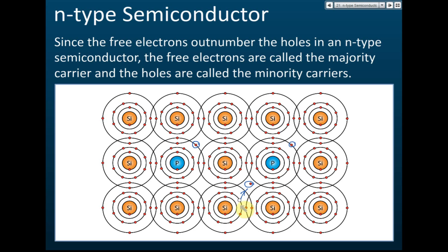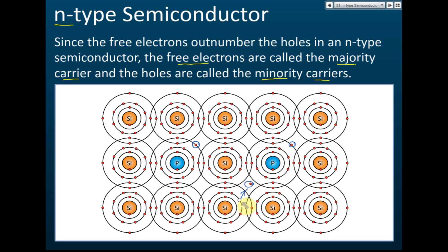Therefore, the free electron is called the majority charge carrier, because in an n-type semiconductor there are a lot of free electrons. Sometimes electrons jump out and form a hole, but we have very few holes, so the hole is called the minority carrier — because the free electrons outnumber the holes. You must know this for the exam: in an n-type semiconductor, electrons are the majority carrier and holes are the minority carrier.